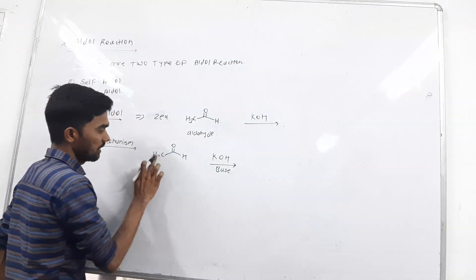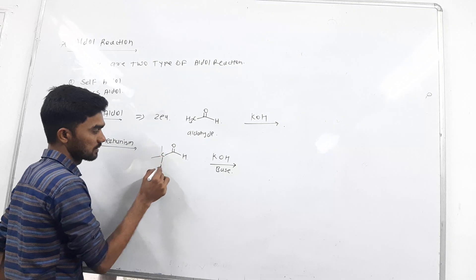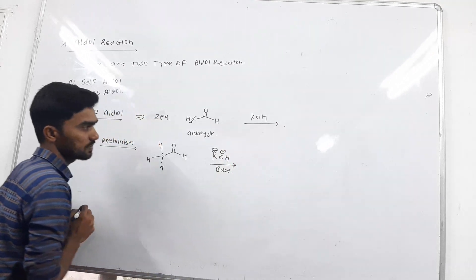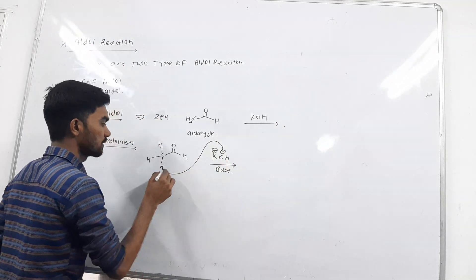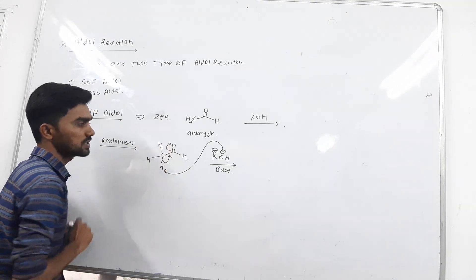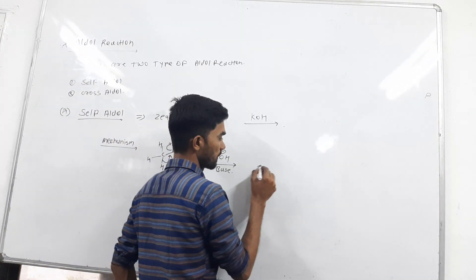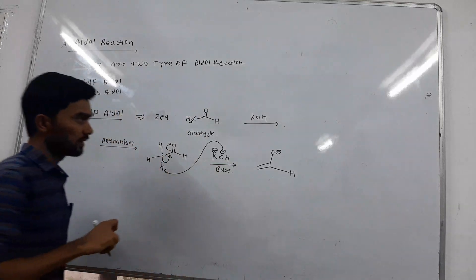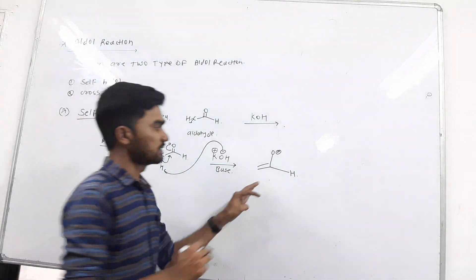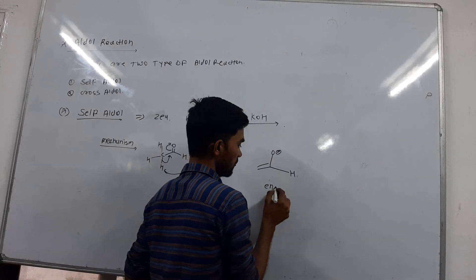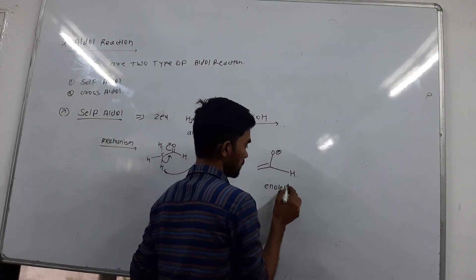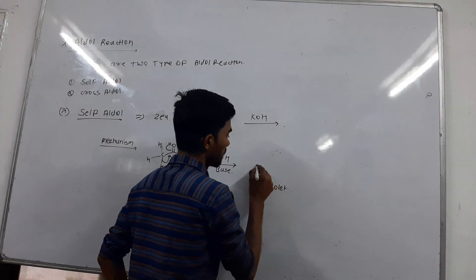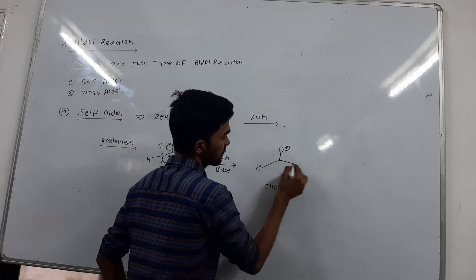First, KOH is the base. A proton is present — three protons — so OH minus abstracts the proton. This leads to the formation of the enolate ion, with O minus. In self-aldol reaction, this enolate is formed and will then attack.